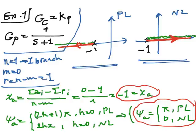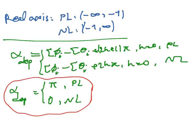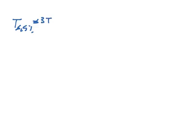We don't have any break-in point or breakaway point because we have only one pole for the open-loop system. Now, the question asks us to compute, if possible, the value of Kp such that given the step response of the closed-loop system, the settling time for 5% is equal to 0.3 seconds. For this first-order system, the settling time for 5% is approximately equal to 3 times the time constant, so the time constant should equal 0.1 seconds.